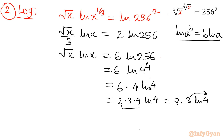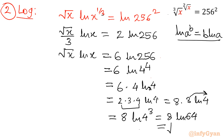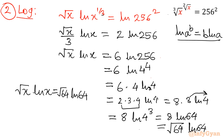Then this 3 will go to the exponent, so it will become 8 ln of 4 raised to 3, which is equal to 8 ln 64. Now 8 I will write as square root 64, so it becomes root 64 times ln 64. You can see the left hand side is root x times ln x equal to root 64 times ln 64. Comparing both sides, the conclusion is x is equal to 64.